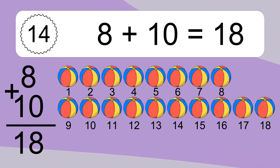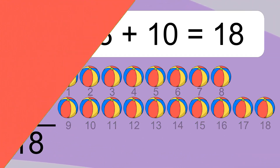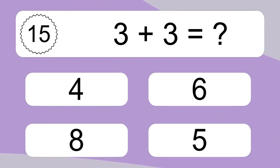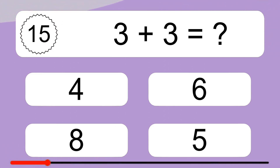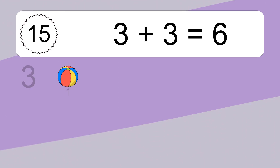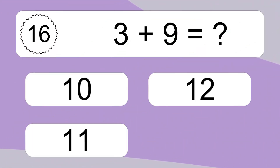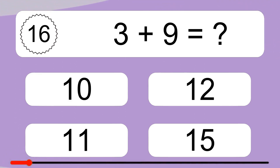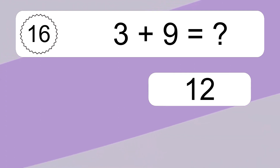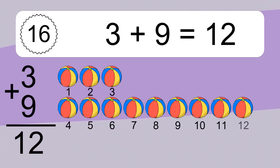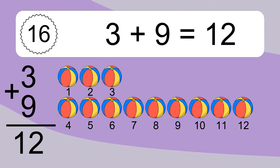12, 13, 14, 15, 16, 17, 18. 3 plus 3 equals what? 3 plus 3 equals 6. Let's count it. 1, 2, 3, 4, 5, 6. 3 plus 9 equals what? 3 plus 9 equals 12. Let's count it. 1, 2, 3, 4, 5, 6, 7, 8, 9, 10, 11, 12.